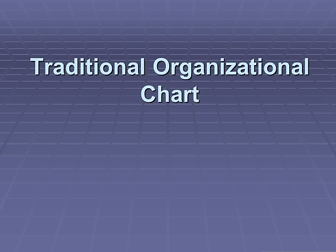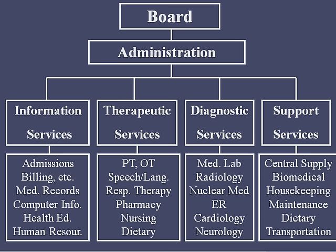A traditional organizational chart has the board at the very top — those are the people that typically own the hospital and are responsible for making all the major decisions. Underneath them is administration, including department heads and CEOs. Below administration are four subgroups: informational services, therapeutic services, diagnostic services, and support services. This is what a traditional organizational chart looks like.